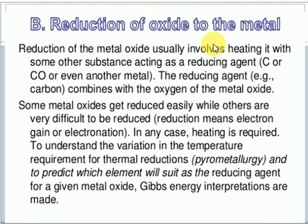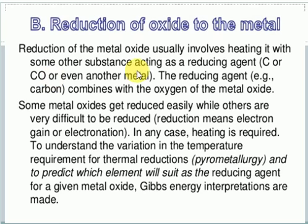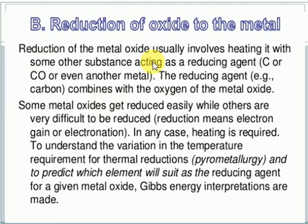After calcination or roasting converts the metal ore into oxide, we want to convert that oxide into a pure metal. Reduction of the metal oxide usually involves heating with a reducing agent such as carbon or carbon monoxide. However, the reducing agent is specific to the particular metal oxide. The Ellingham diagram and thermodynamic principles explain which reducing agent works best and at what temperature.